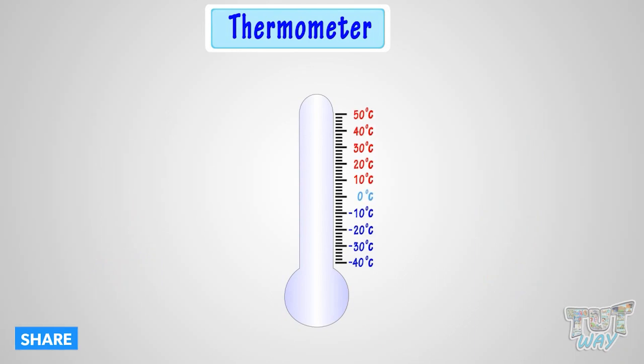There is a red or silver vertical line inside the thermometer. Temperature is shown in increasing order, starting from the bottom on this number line on the tube.